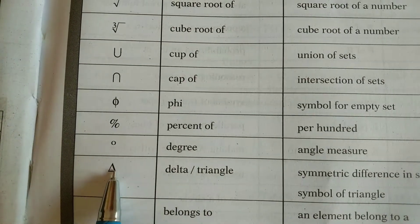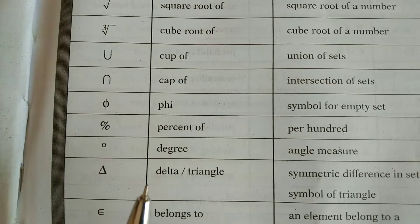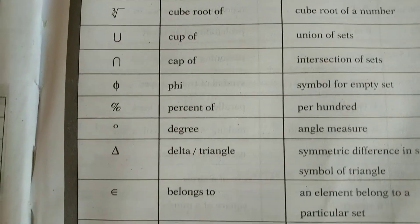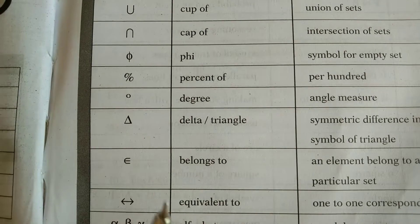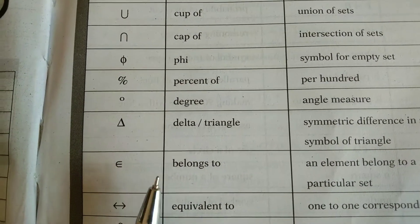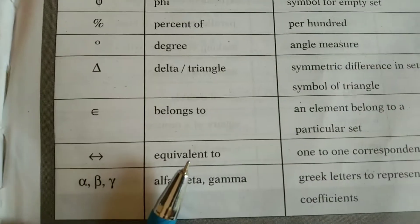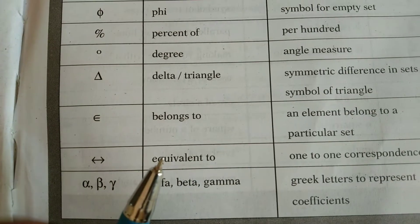And then delta, or also we call it as triangle. Symmetric difference in sets or symbol of triangle. And then, an element belongs to, an element belongs to a particular set. And then equivalent to, one to one correspondence.